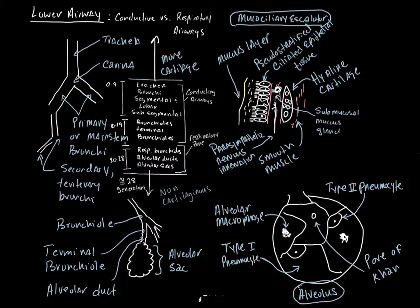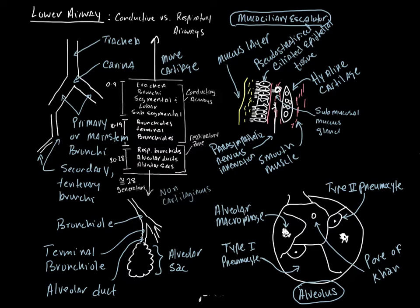The conducting airways start at the glottis. The trachea bifurcates into what we call the primary bronchi or main stem bronchi. In pulmonology, a bronchus is a large passage and a bronchiole is a small passage. Bronchi tend to be cartilaginous — they have lots of hyaline cartilage. Bronchioles tend to be non-cartilaginous — they do not have cartilage in them.